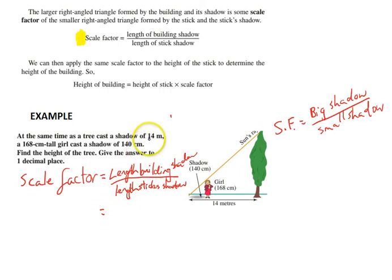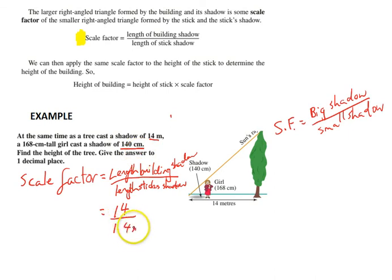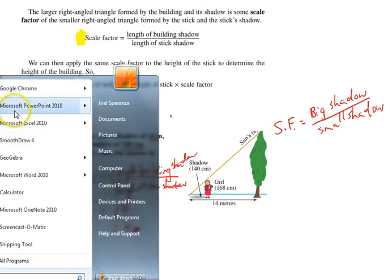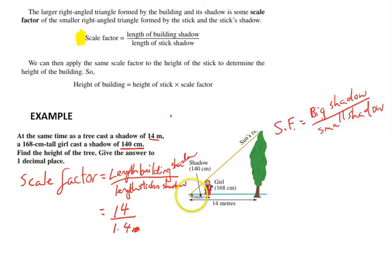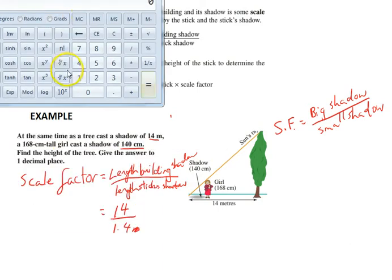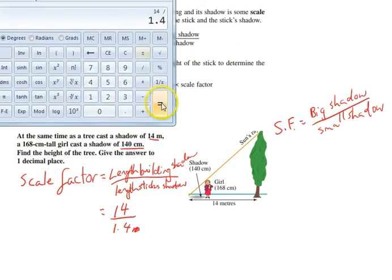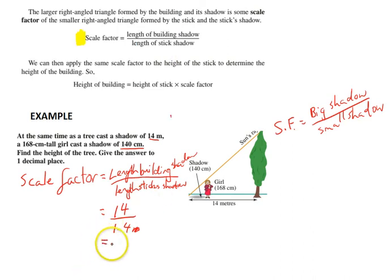The length of the building's shadow is 14 metres. The length of the stick's shadow has been given as 140 centimetres, but you need to put both shadows in the same units, so that's 1.4 metres. On the calculator, 14 divided by 1.4 equals 10. So my scale factor is equal to 10 — that was step one.